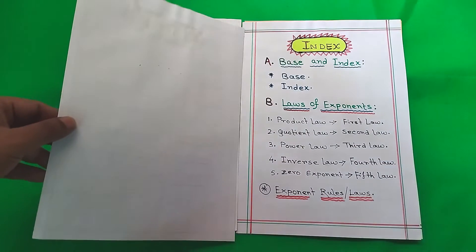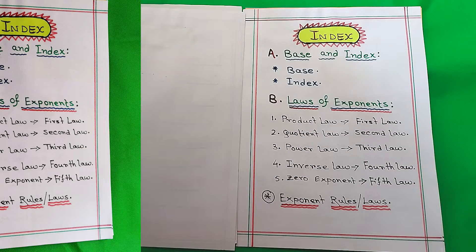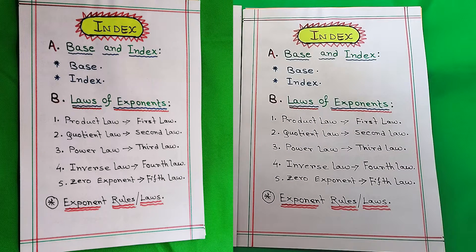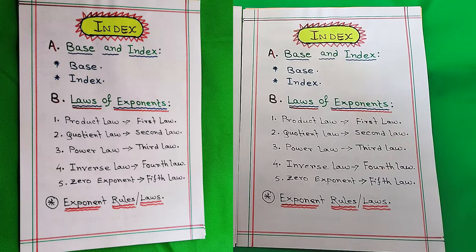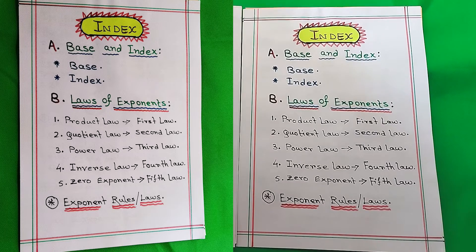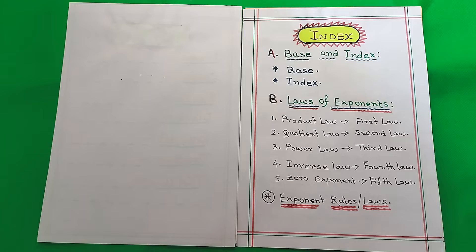Here we have the index. Point A is base and index. Point B is laws of exponents, which has five points: Product Law (First Law), Quotient Law (Second Law), Power Law (Third Law), Inverse Law (Fourth Law), and Zero Exponent (Fifth Law). We also have the exponent rules and laws.